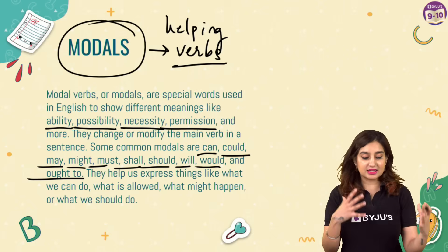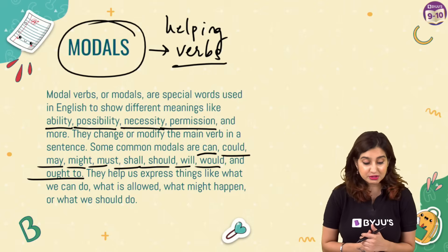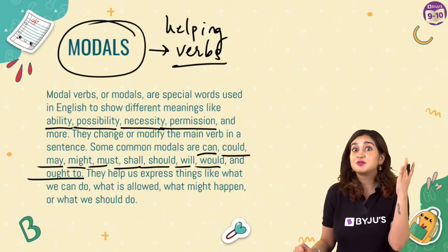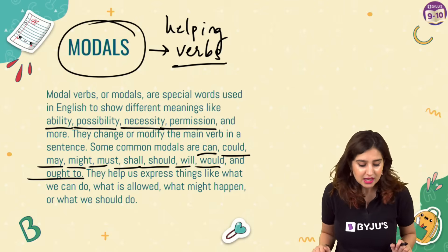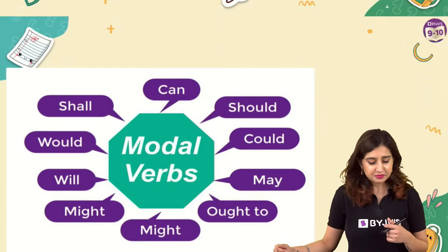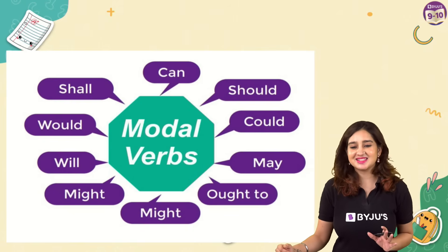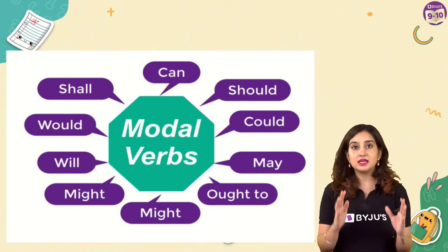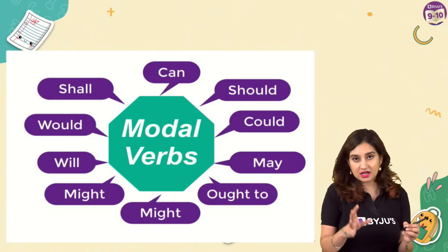They help us express things like ability - what you can or cannot do; possibility - something that might or might not happen; necessity - something that you absolutely must do; and permission - something that you can ask someone if you could do. Here's your list of modals very nicely presented on screen, and looking at these modals, you can generally tell what they are used for.